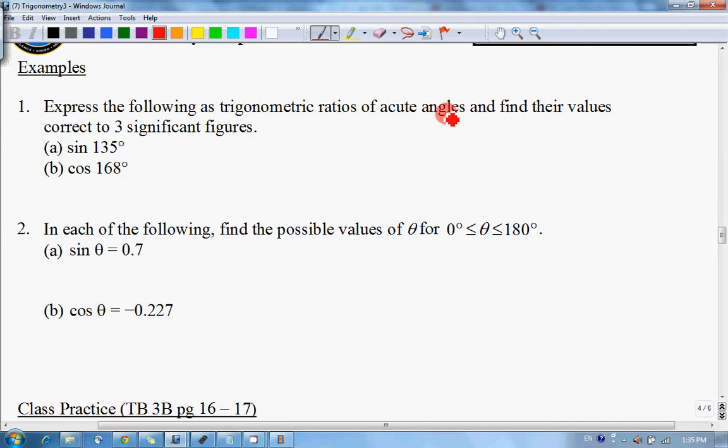What we have learned just now is sine 180 degrees minus theta equals sine theta, and also cosine 180 degrees minus theta equals negative cosine theta.